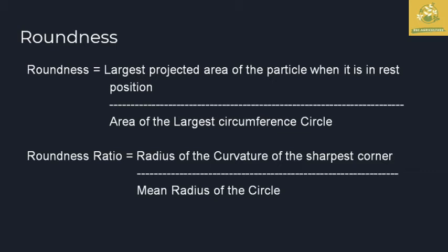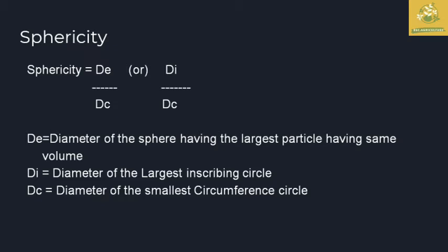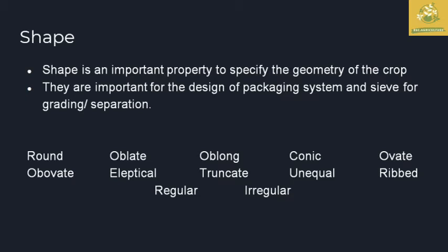Sphericity formula is de divided by dc, where de is the diameter of the sphere having the same volume as the largest particle, and dc is the diameter of the smallest circumscribed circle around the particle. This is how sphericity is calculated. Shape is also another important property to specify the geometry of the crop.